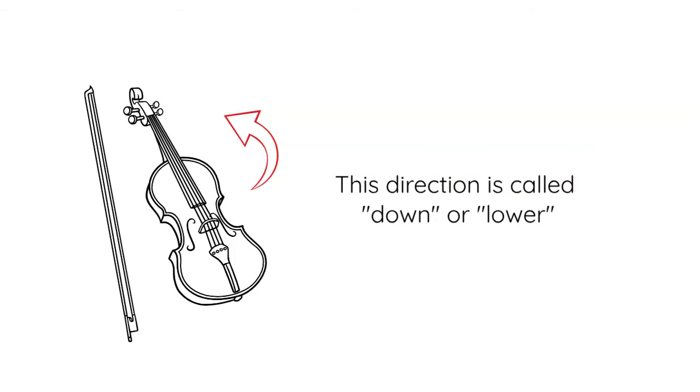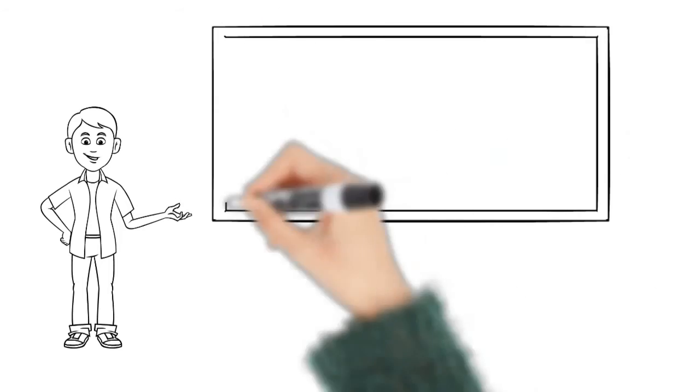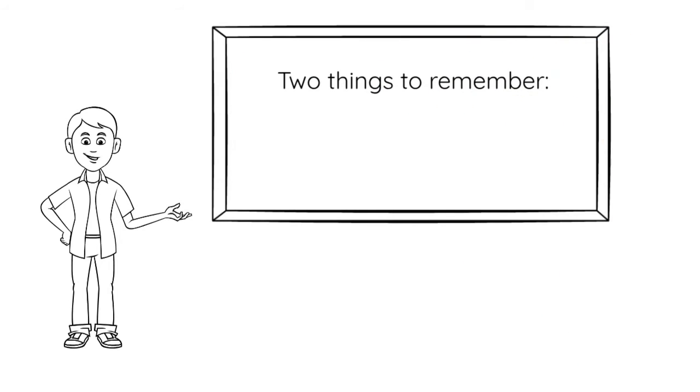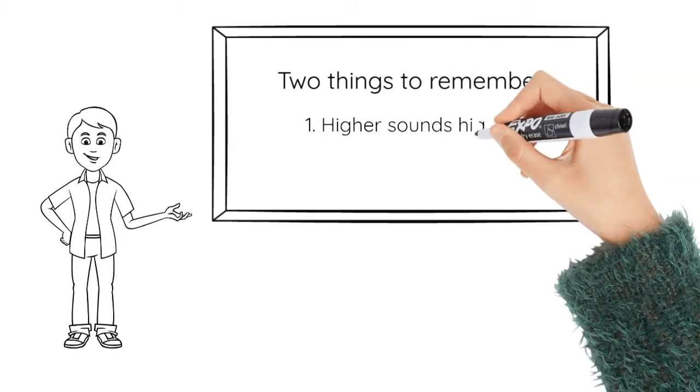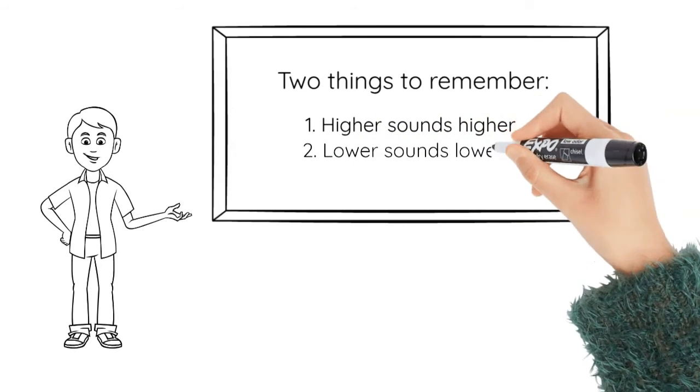I can see why students find this confusing. It's actually counterintuitive when you're looking at a violin. But all you have to do is play it to remember higher means higher or sharper pitches, and lower means lower or flatter pitches.